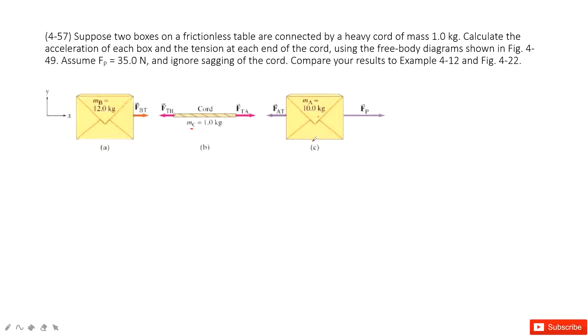And in this one, we can write Newton's second law. For A, the net force horizontal is F_T,B equals mass times acceleration. Second one is F_T,A minus F_T,B equals mass times acceleration. The third one, F_T,B minus F_T,A equals mass times acceleration.